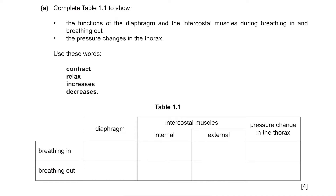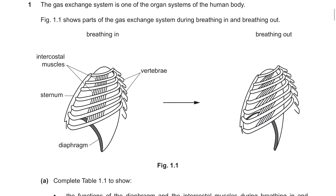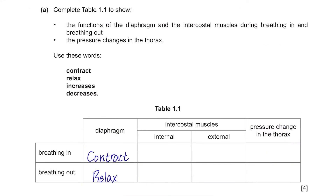The pressure changes in the thorax — use these words: contract, relax, increases, and decreases. When you breathe in, your diaphragm contracts. So the diaphragm contracts when breathing in and relaxes when breathing out.